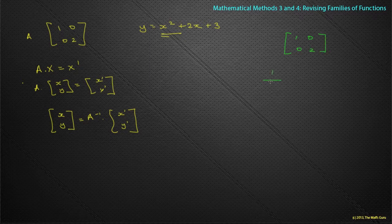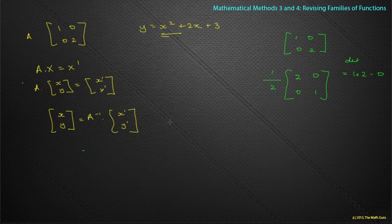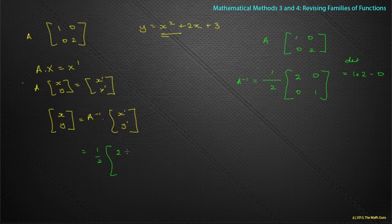If A = [1, 0; 0, 2], I need to do 1 over the determinant. The determinant is given by 1 times 2 minus 0 — these corners minus these corners — which is 2, so that's a half. Then I swap the main diagonal entries: 2 and 1, and the signs of the off-diagonal change, but as they're 0, no real worries. So A⁻¹ equals ½ × [2, 0; 0, 1], multiplied by (x-dashed, y-dashed).